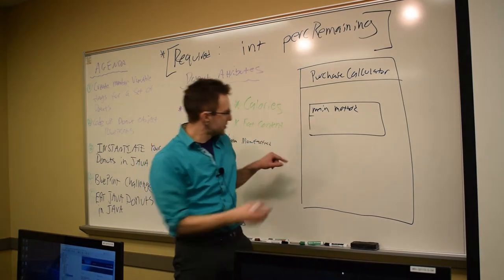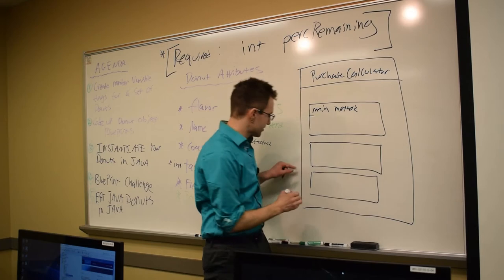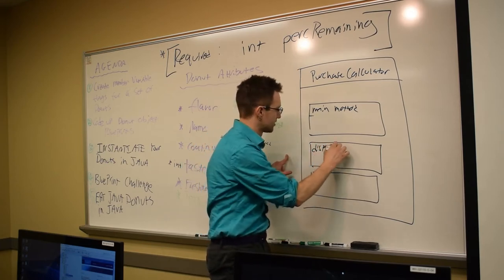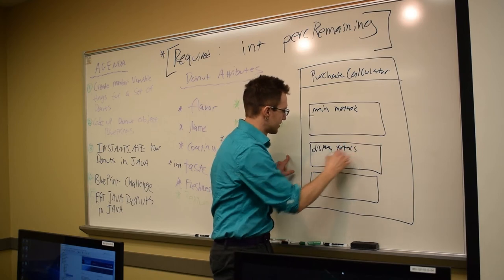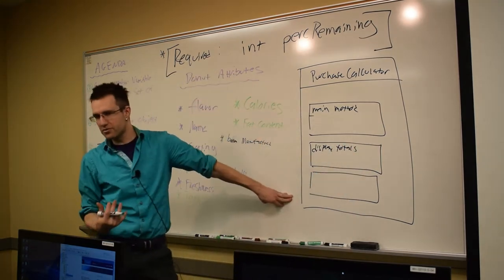And so from main, we could do what? We could call other methods, like display totals, and these manner of things. This was a self-contained program. It was just one class.